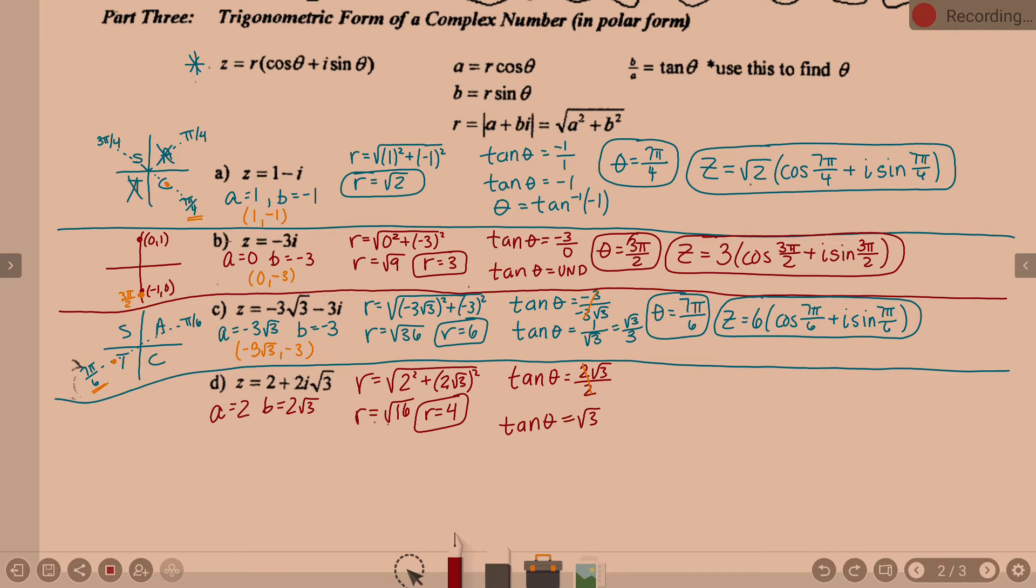We want to know at what angle does tangent equal square root of 3, or in our words, theta is the tangent inverse of square root of 3. According to our basic chart, tangent of pi over 3 is square root of 3. Now, the question becomes, is that the right angle or not? It's positive. If it's positive, it's going to be quadrant 1 or 3. What do you know about A and B? A and B were both positive, and so that's going to put us in quadrant 1.